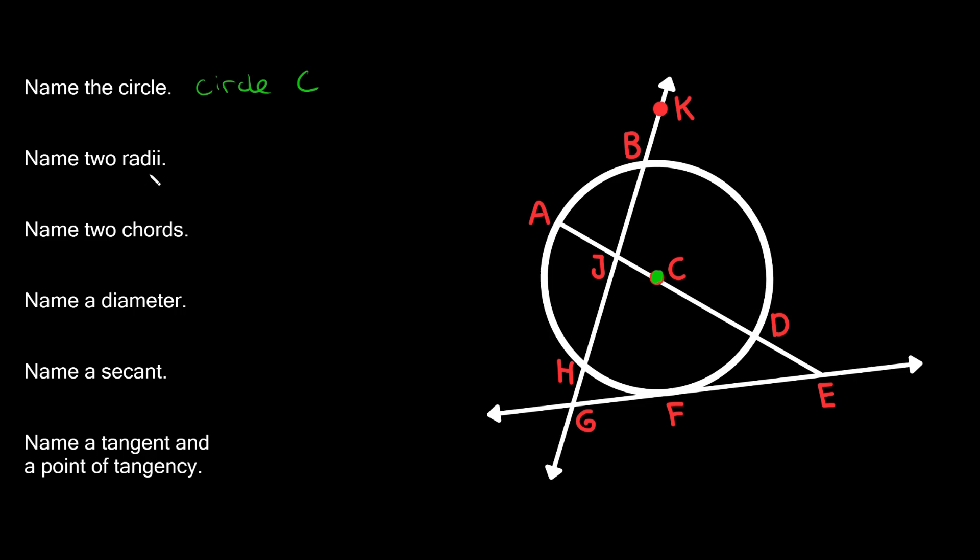The next one says name two radii, so two radiuses. So the two radiuses, well remember a radius is just a line or segment that goes from the center of the circle to any edge on the circle.